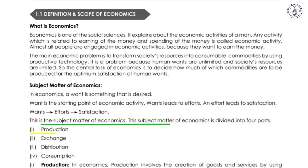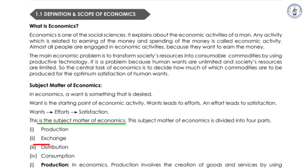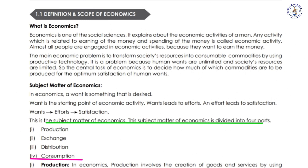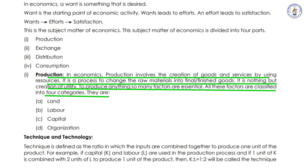The first thing is Production. Next is Technique and Technology. The third is Exchange. The fourth is Distribution. There are seven things in total that we are talking about in economics.